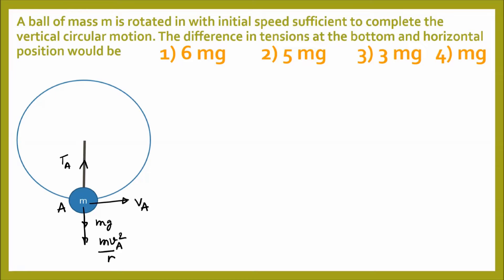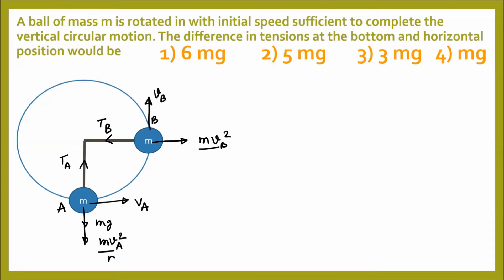At the horizontal position B, the tension T_B acts towards the center as centripetal force, and the velocity v_B is tangential. The centrifugal force is mv_B²/r. At position B, the weight mg acts downward — perpendicular to the tension — so T_B = mv_B²/r.